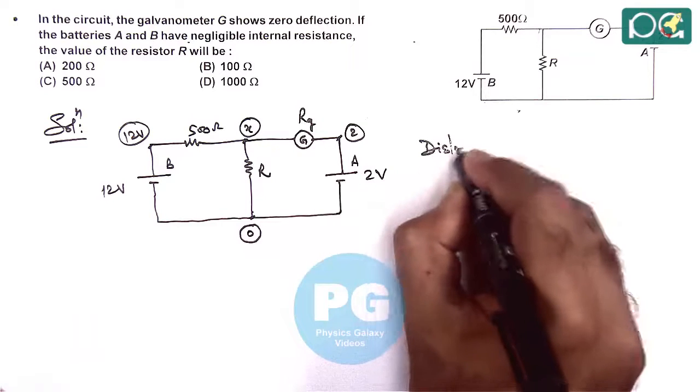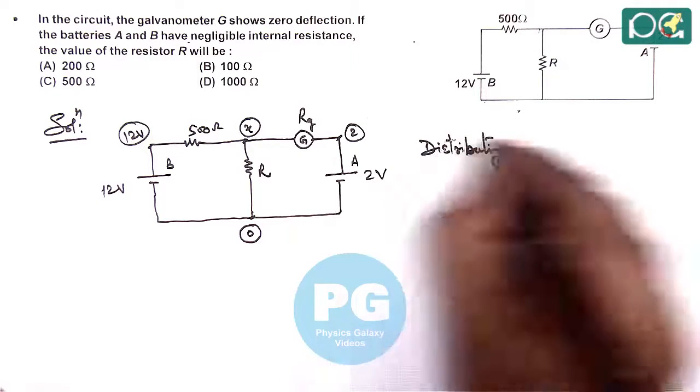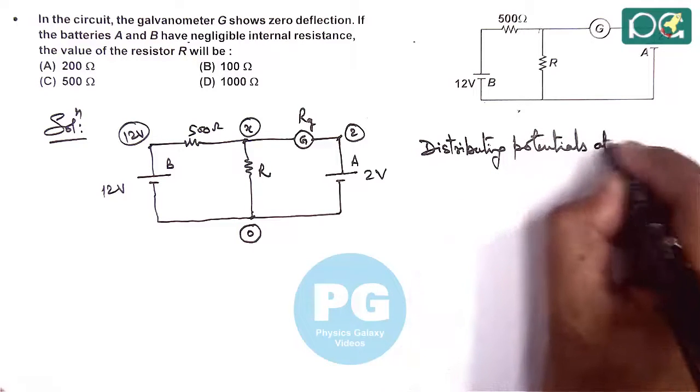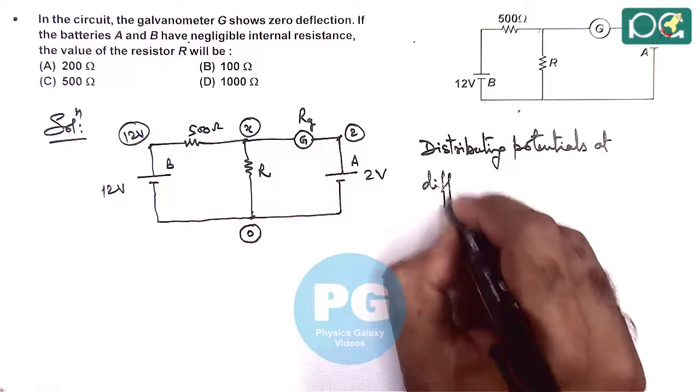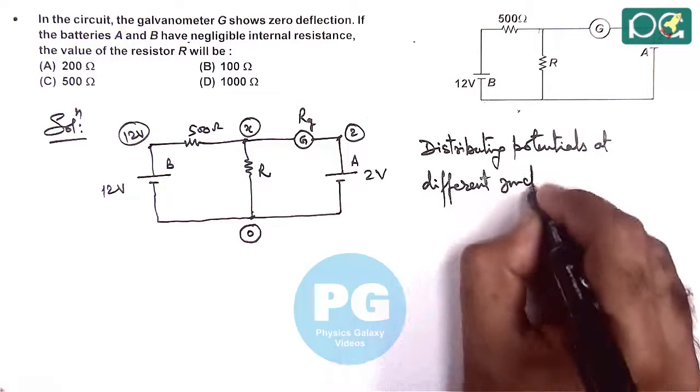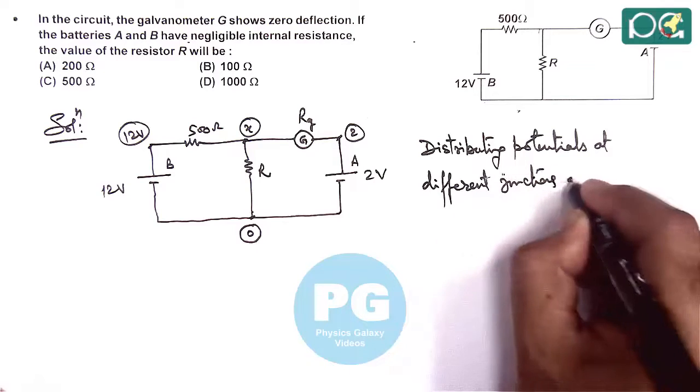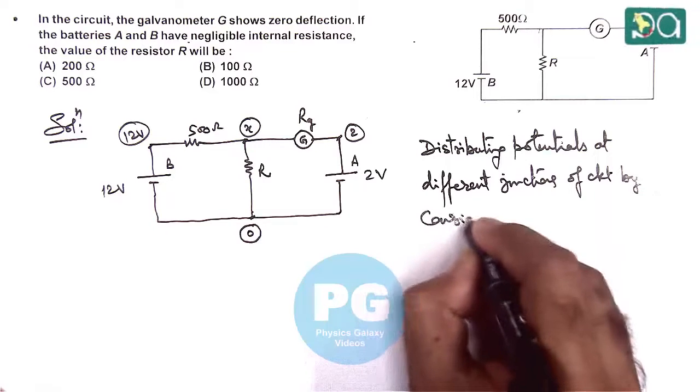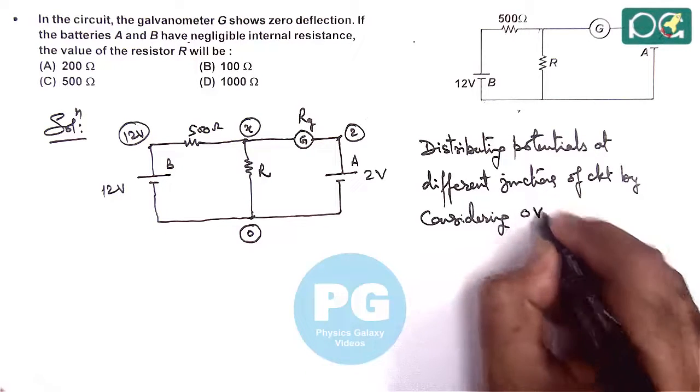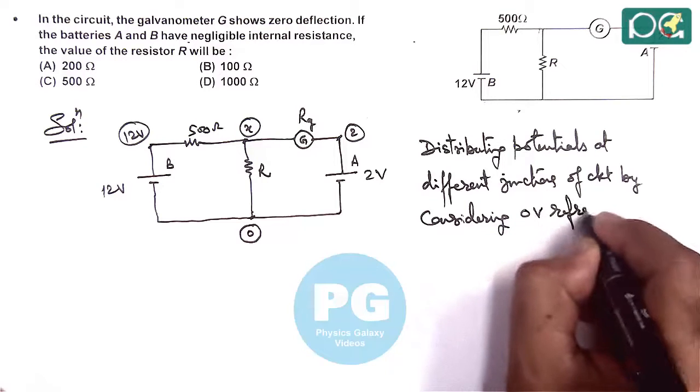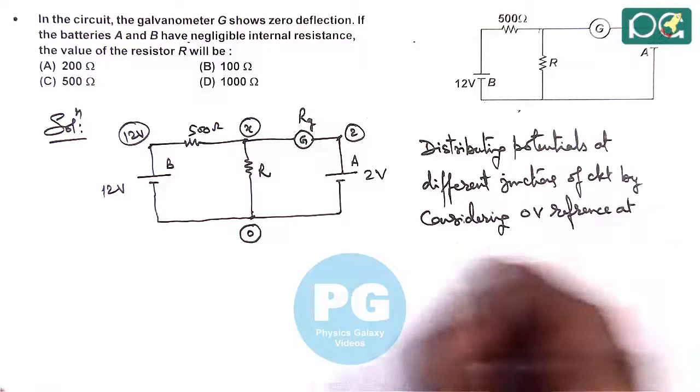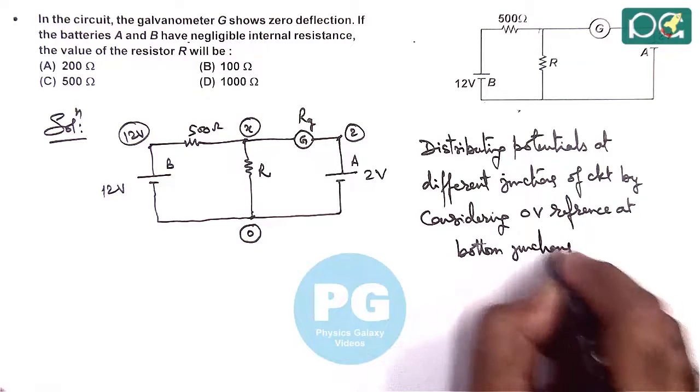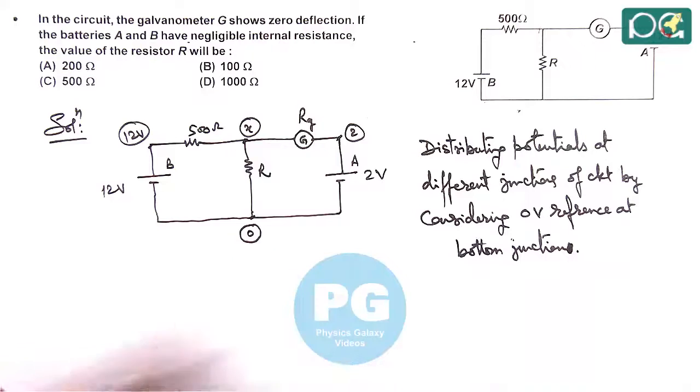So here we have shown distributing potentials at different junctions of the circuit by considering zero volt reference at the bottom junction.